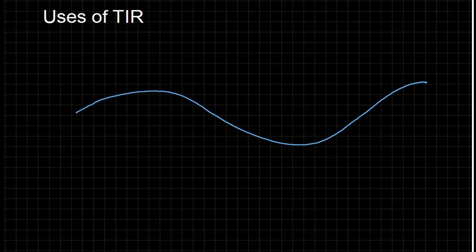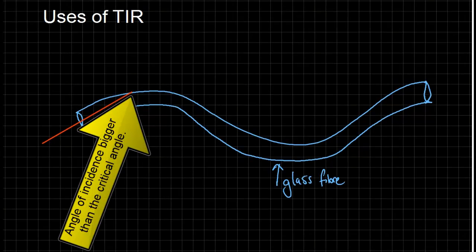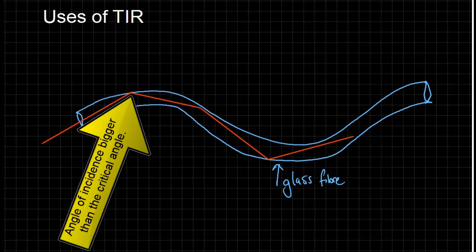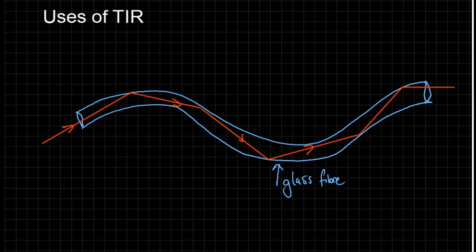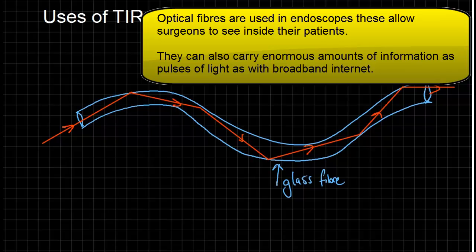Now let's have a look at some of the uses of total internal reflection. Taking a thin strand of glass or a glass fiber, you can use it as a tunnel for light. That's useful for things like sending information down optical fibers, for instance with broadband, or even for sending light into a patient's body and getting light out of a patient's body in an endoscope.